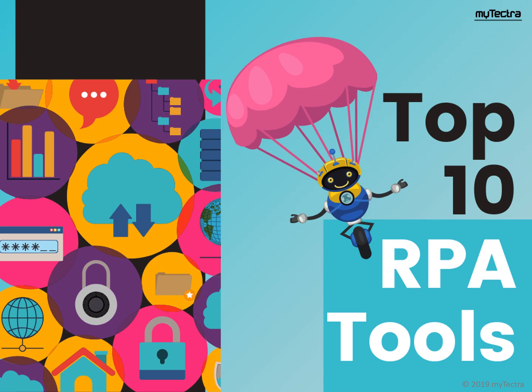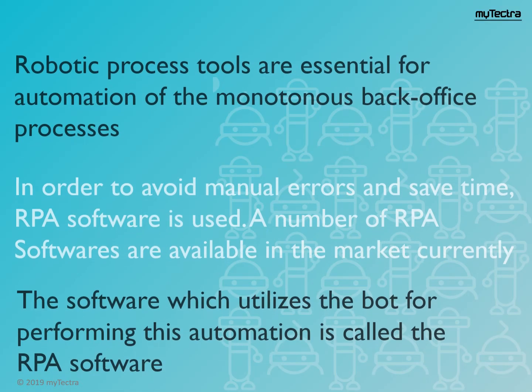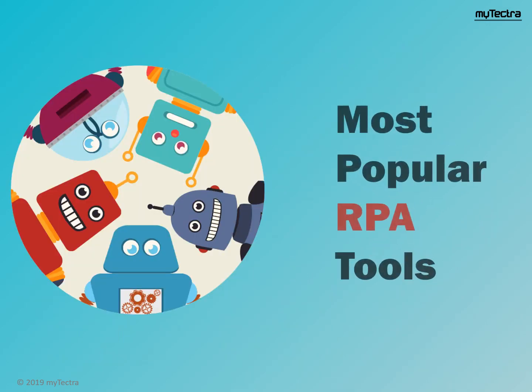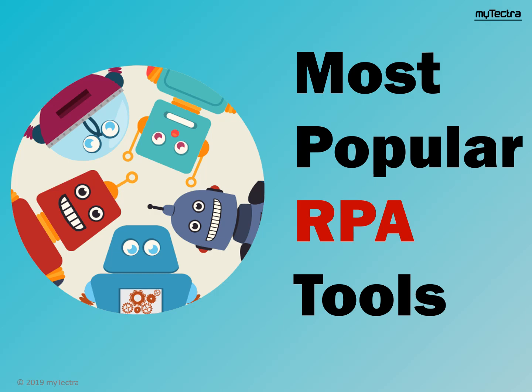Hi, this is Rhea from MyTitra and we are going to discuss top-gen RPA or Robotic Process Automation Tools. RPA tools are used for automation of back-office processes. In order to avoid manual errors and save time, RPA software is generally used. A number of RPA softwares are available in the market currently. An RPA software uses a bot or software robot to perform automation. Let's see which are the most popular RPA tools right now.